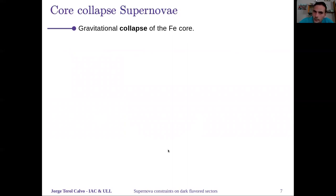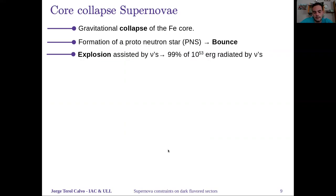The core collapse supernovae occur when the iron core of a red giant collapses gravitationally, and it starts the formation of a proto neutron star. This proto neutron star bounces and creates a shock wave on the outer layers of the red giant star, which in the end it explodes, radiating a huge amount of energy.